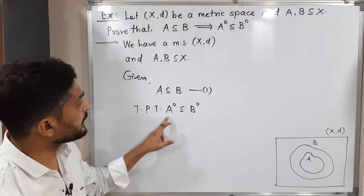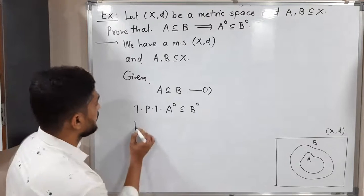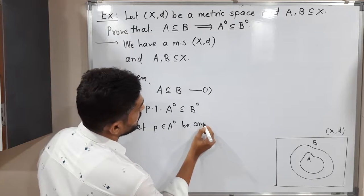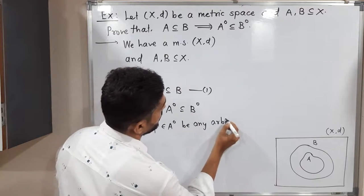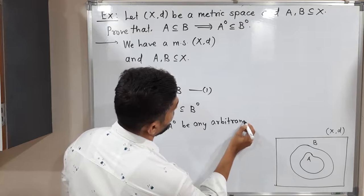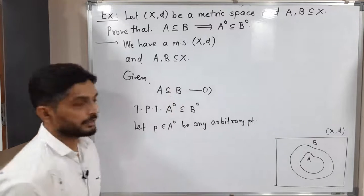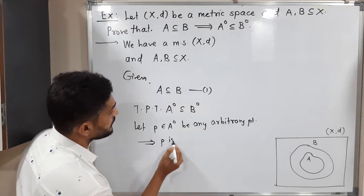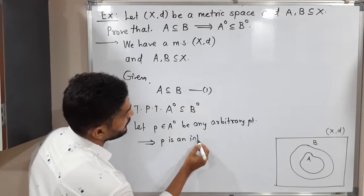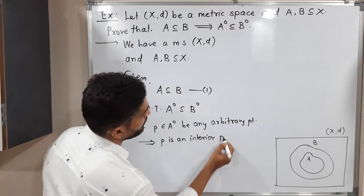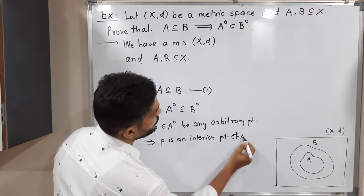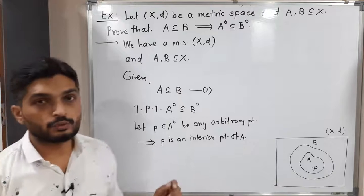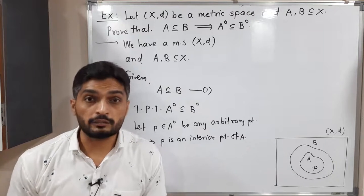So let us take an arbitrary point from A°. Let P ∈ A° be any arbitrary point. So P ∈ A° means we can say P is an interior point of A. That means we are taking one point P from A°, so P is an interior point of A.